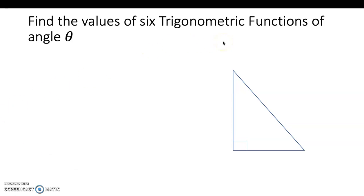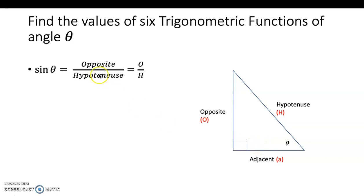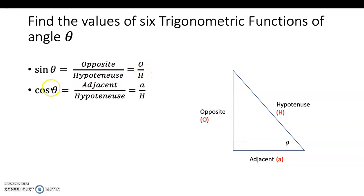In this right triangle, the given angle is theta. The side opposite to the right angle is the hypotenuse, the side opposite to the given angle theta is called opposite (written as O), and the side between these two sides is called adjacent. The six ratios we have: sine theta is opposite over hypotenuse, remembered as O over H, and cosine theta is adjacent over hypotenuse, which is A over H.